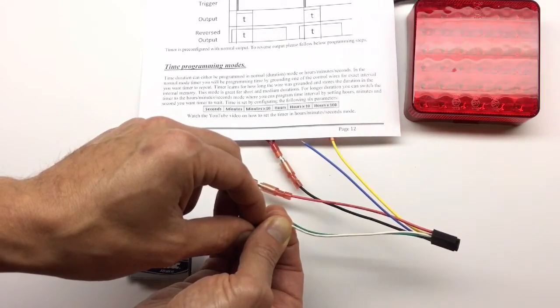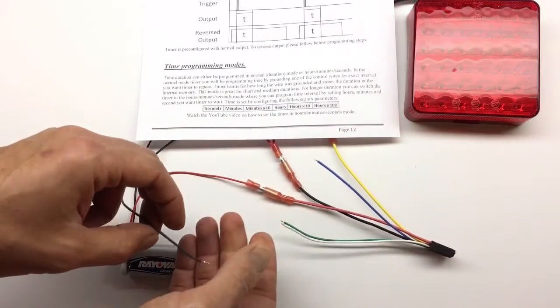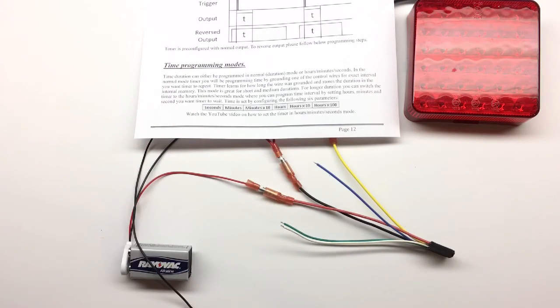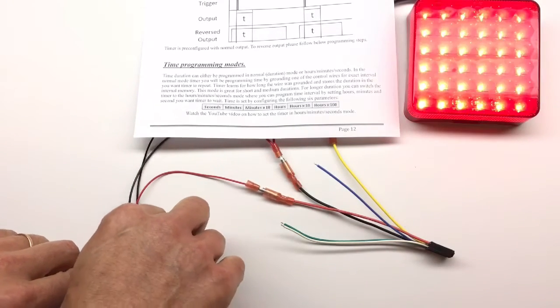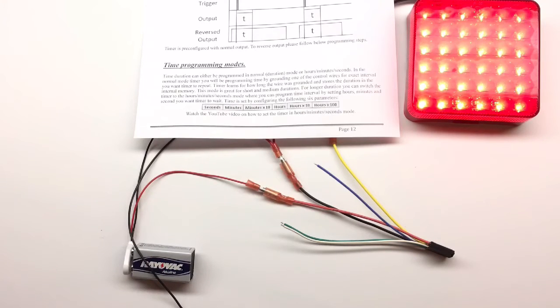And hours by 100 is zero. Now you have to go through all those programming modes because we need to make sure that we set all those six to calculate the total time. So that's it. I'm done. I'm set to 11 seconds. Disconnect the power. Connect it. And it will stay for 11 seconds.